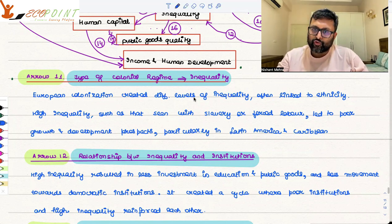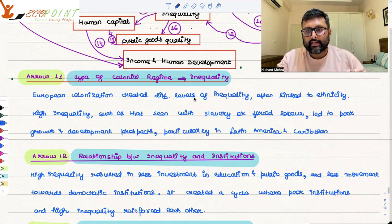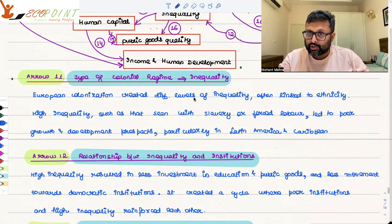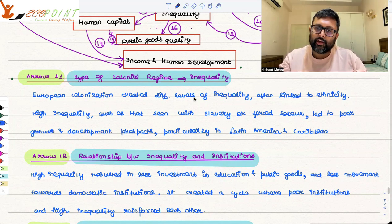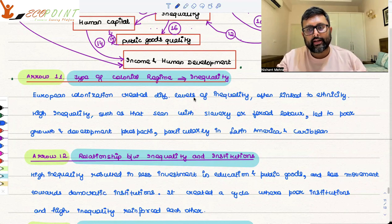This is generally true in areas of huge inequality: there is less investment in education, in public goods, and in human development. Because if people get educated, they will start questioning. And these institutions do not want people to question. So the way out is to keep inequality very high — people are always in the fight for survival, they have no education, and they cannot ask any questions.